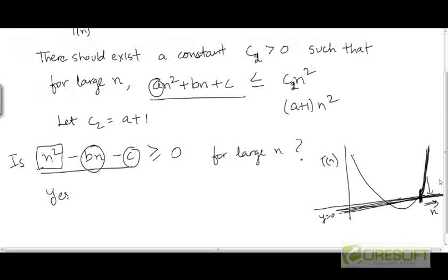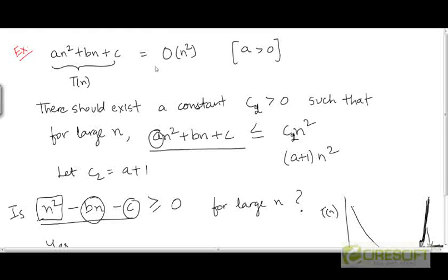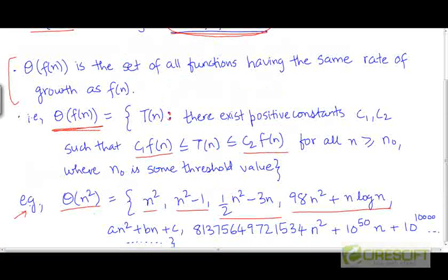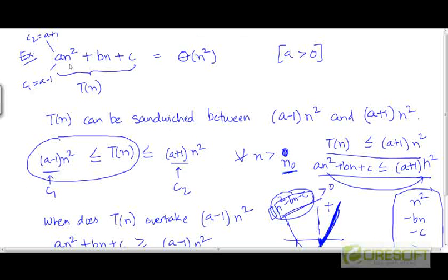If you recall our previous example, an² plus bn plus c — the way we proved that this was O(n²) was that we showed there exists a constant c such that for large n, c times n² is an upper bound on t of n. We also showed that an² plus bn plus c is θ(n²). Now because θ is really a subset of O — any function that is in θ(n²) is also going to be in O(n²) — because θ represents the existence of both an upper and a lower bound, and O represents the existence of an upper bound.